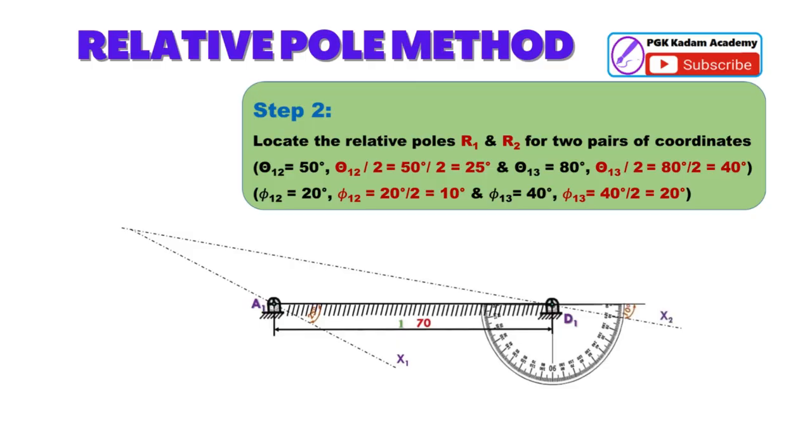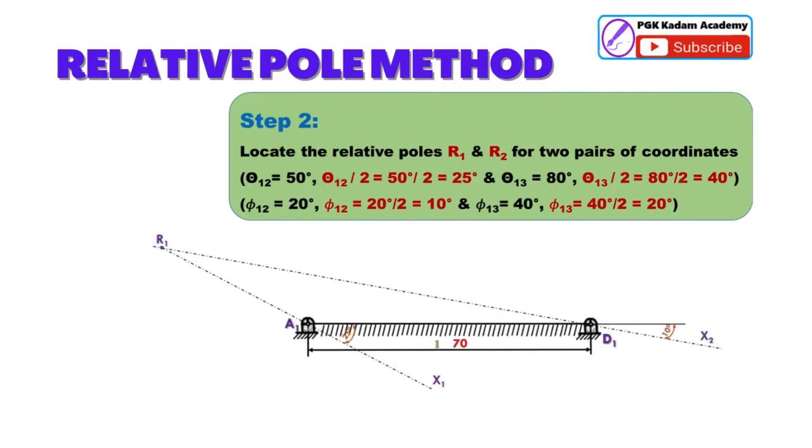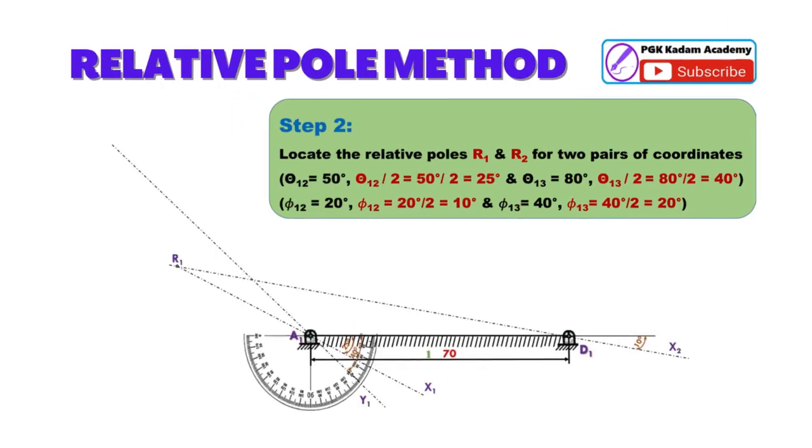Draw another line X2 passing through D1 with an angle theta 1-3 by 2 equal to 80 degrees by 2 equal to 40 degrees. Locate first relative pole R1 at intersection of line X1 and line X2 shown in the figure.